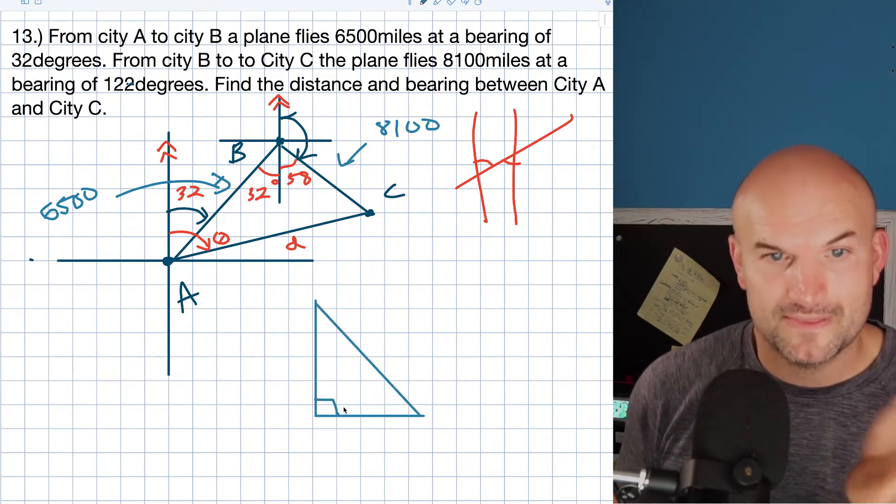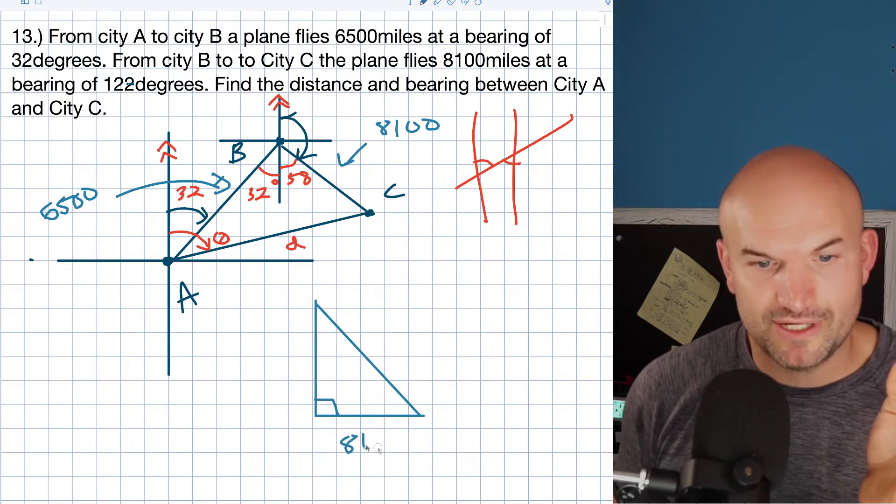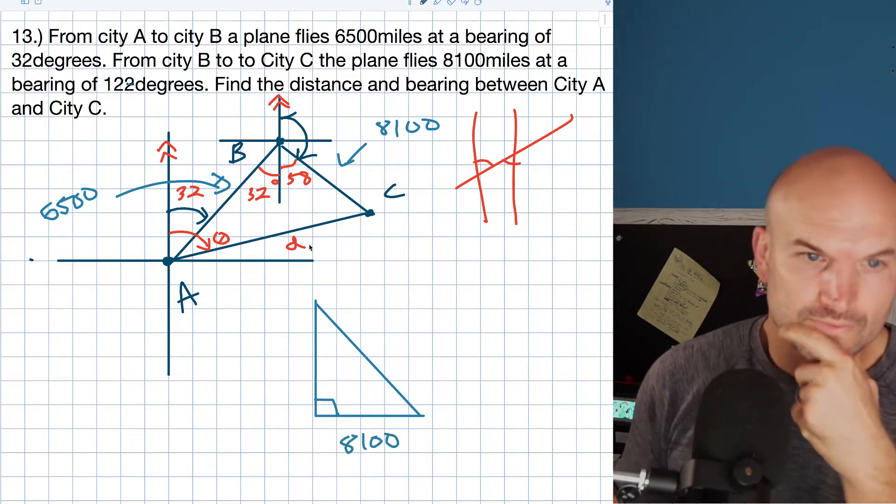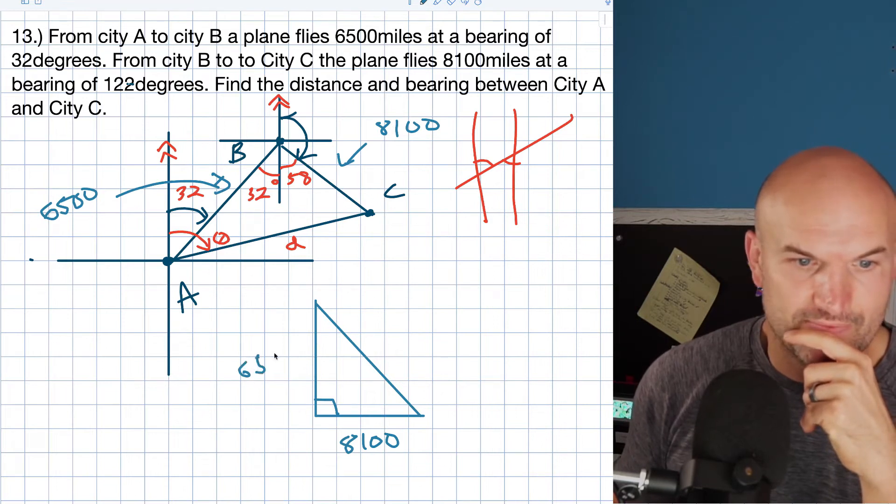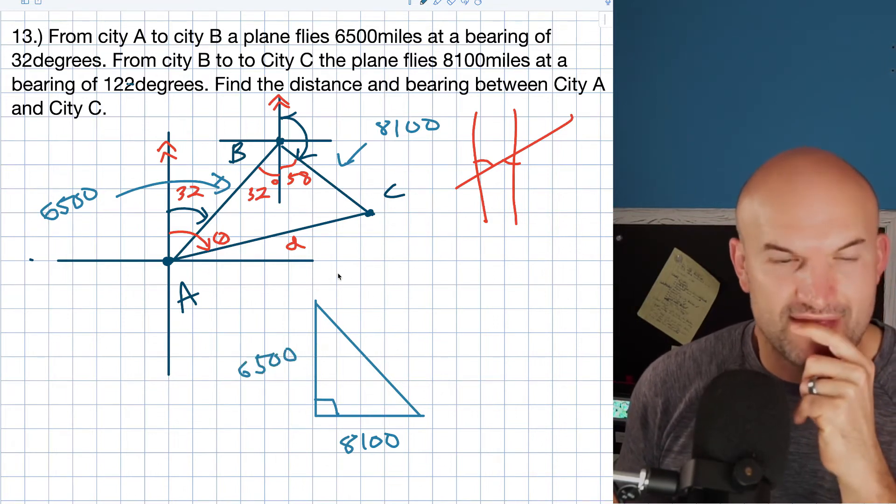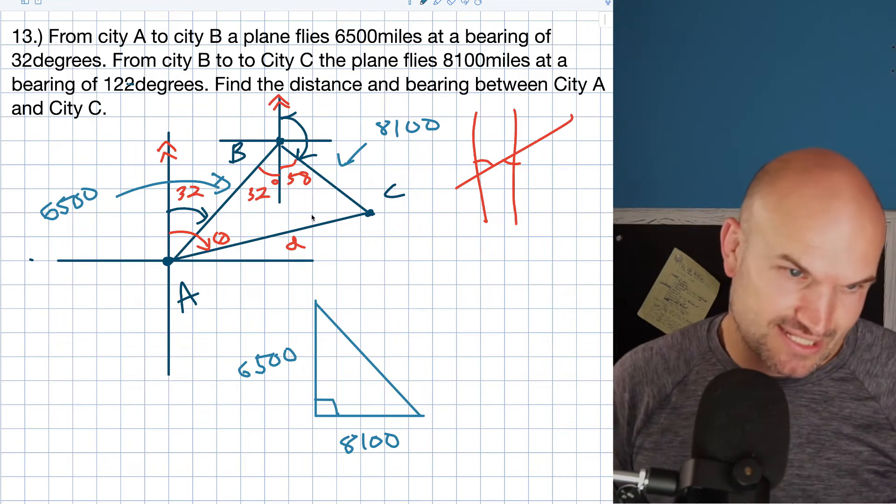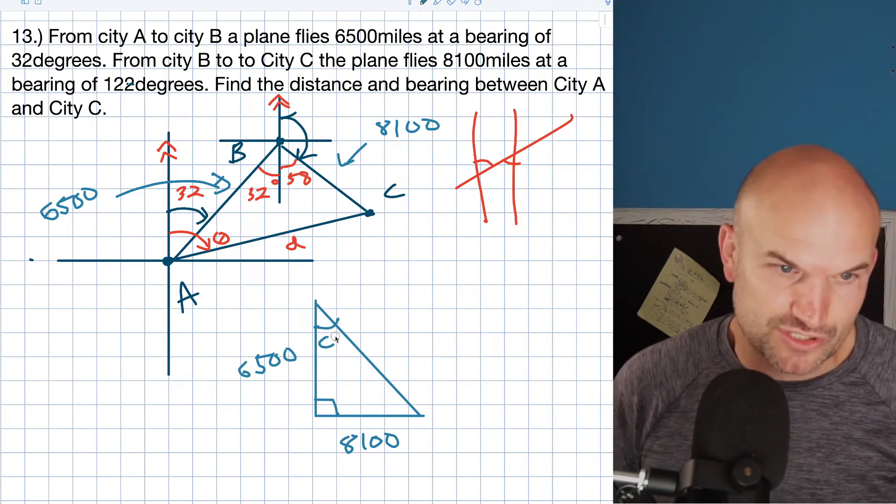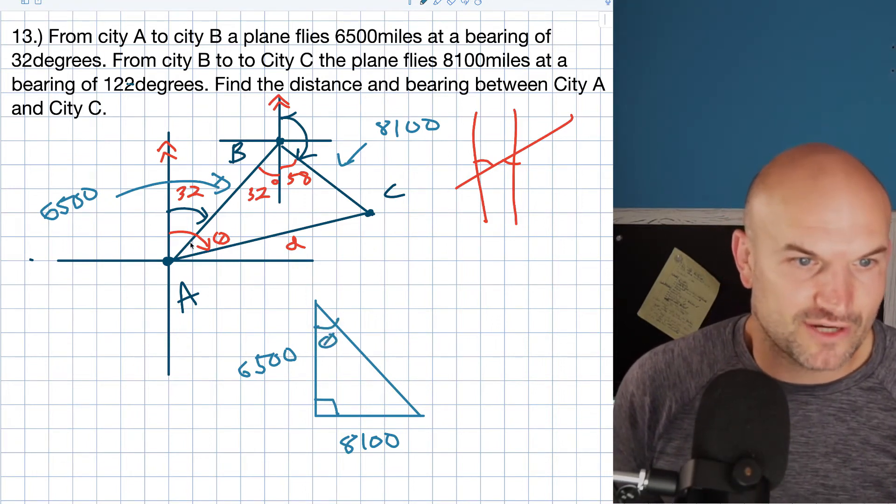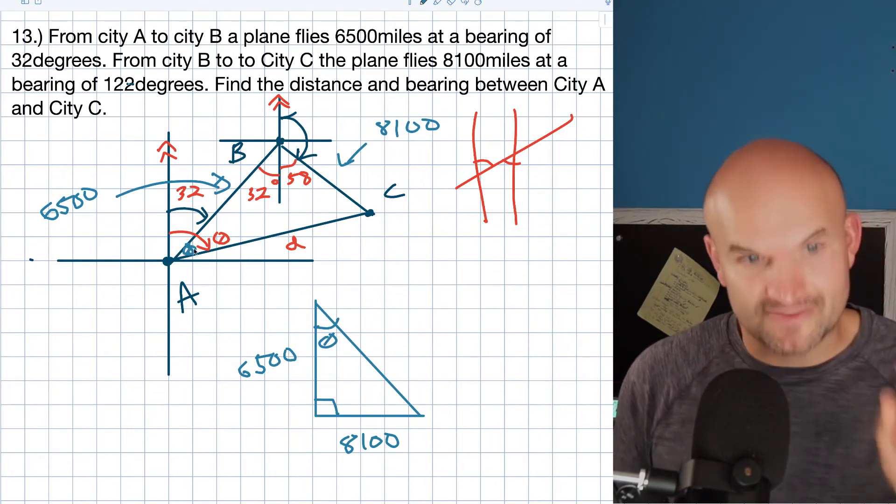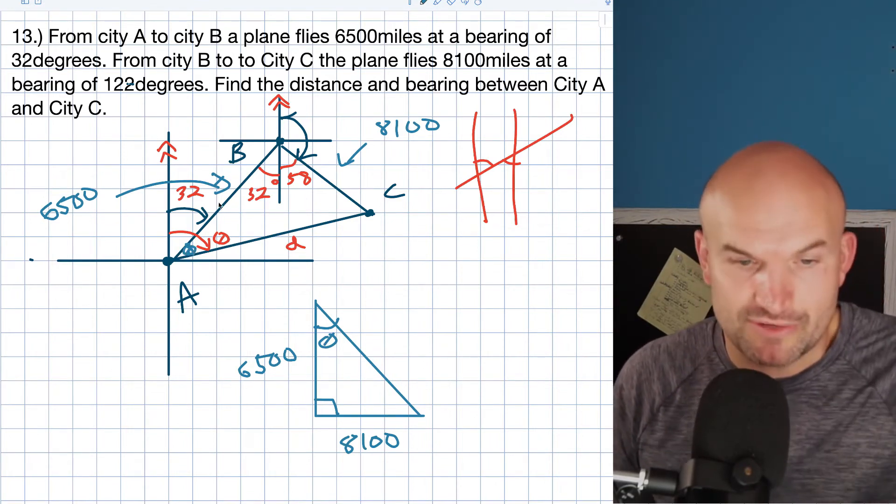Now again, 32 plus 58 is what? That's 90. Okay. So this one is 8,100 and then this side is 6,500. And then this angle, that's 90. So we're looking for this angle which is going to be theta. I want to figure out what that sliver is, that theta. Because if I can figure out that theta, I just need to add it to 32 and I'm good.